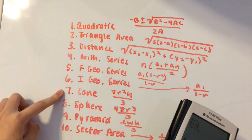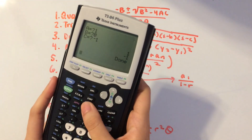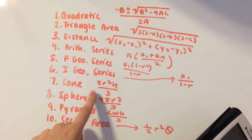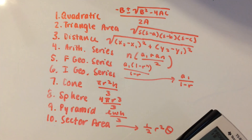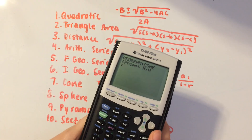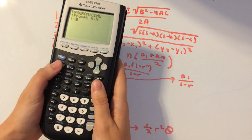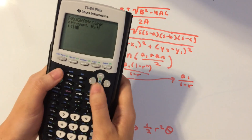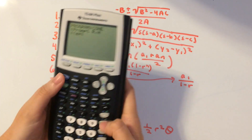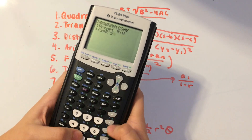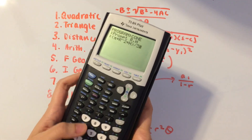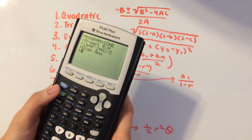The next one is volume of a cone. Create a new program and call this CONE. The formula is pi times r squared times h over 3, so all we need is R and H — prompt for both. Multiply pi (Second then the caret key) by Alpha R caret 2, times Alpha H, close parentheses, divide by 3. Display your answer and there you go.